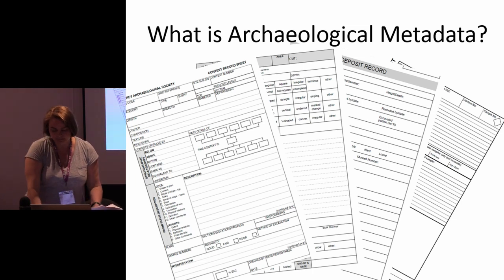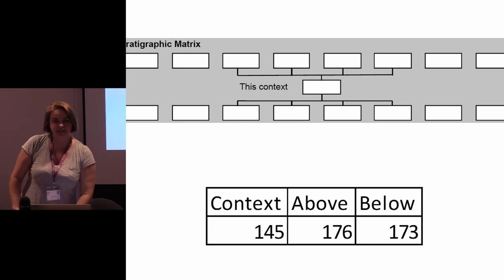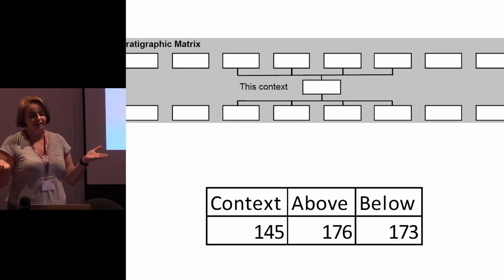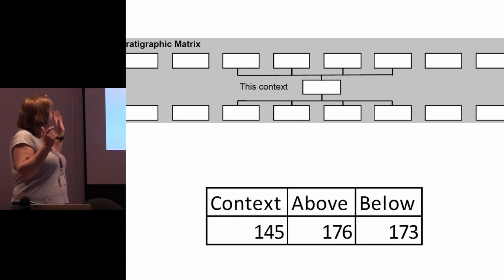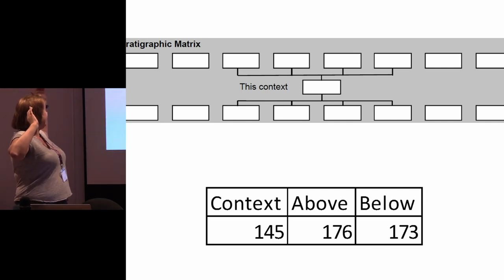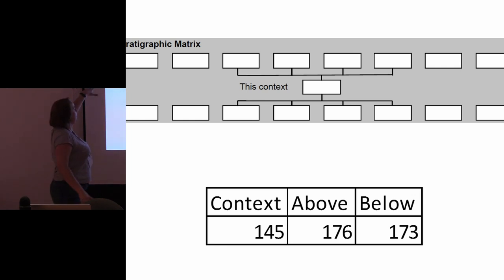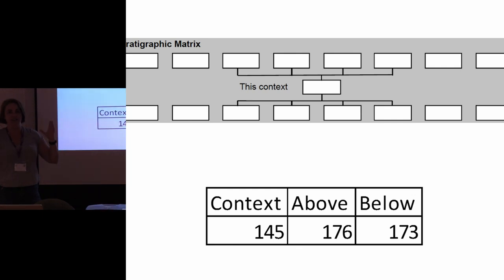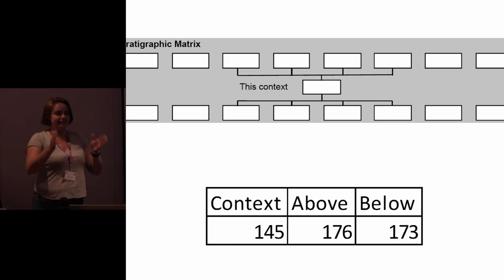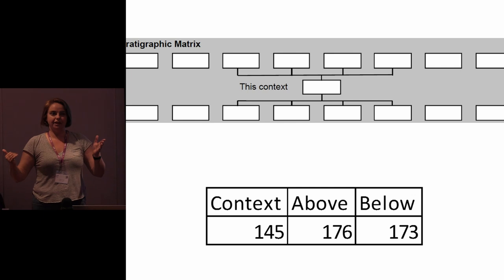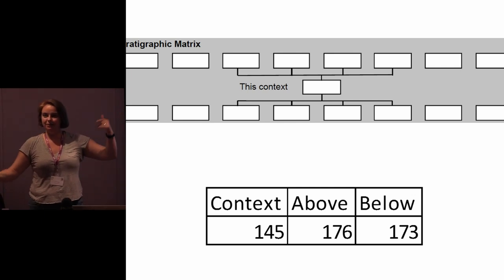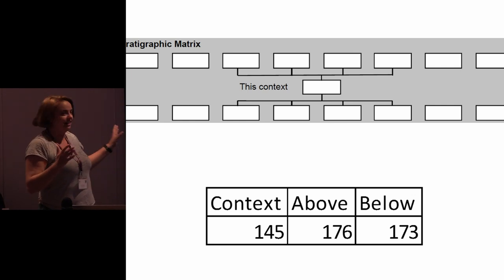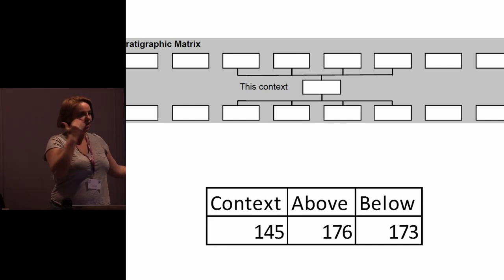Here's an example of what happens when you start to strip your data off your pro forma and remove it from its context. The stratigraphic matrix — my favourite one — gives context to what is above and what is below. Once you start to define it in cellular data, what is above and what is below depends entirely on the field definition: is the sentence 'this context is above or below' or 'these contexts are'? You end up with a roots or tree matrix depending on how you decide to translate that.